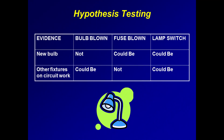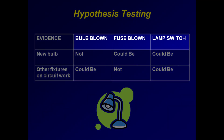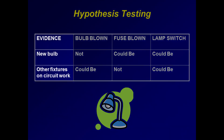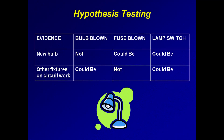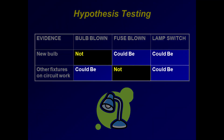In our next example, a table lamp doesn't work. There are three possibilities: the bulb is blown, the circuit fuse is blown, or the switch is malfunctioning. The bulb is new, and other fixtures on the same circuit are also working. Note that in this example, we have some evidence that suggests two of the hypotheses aren't likely.